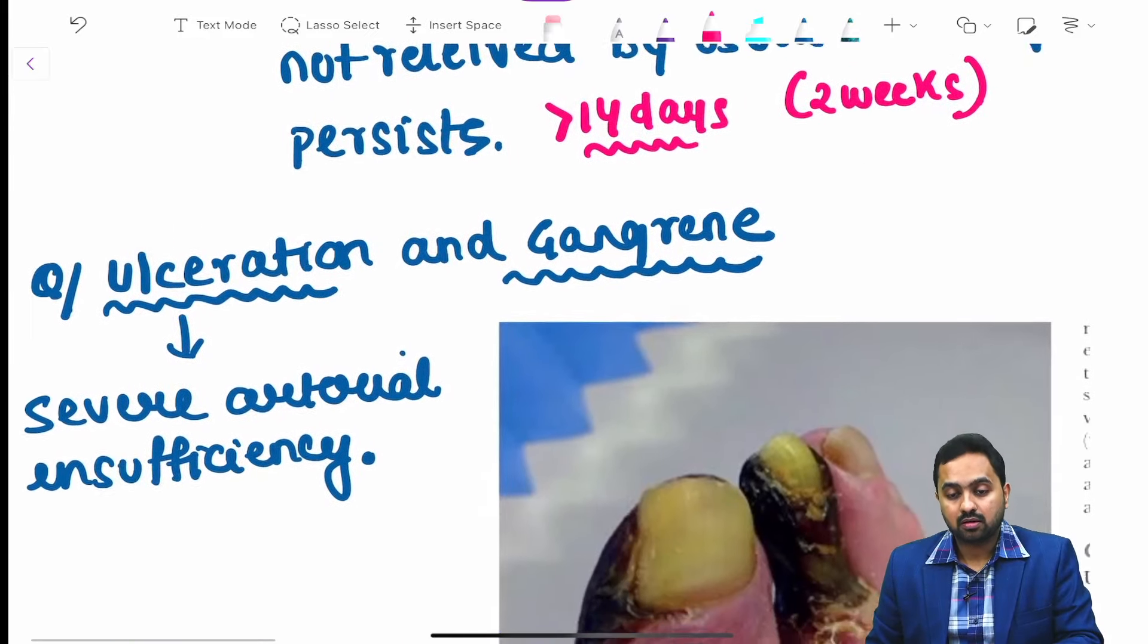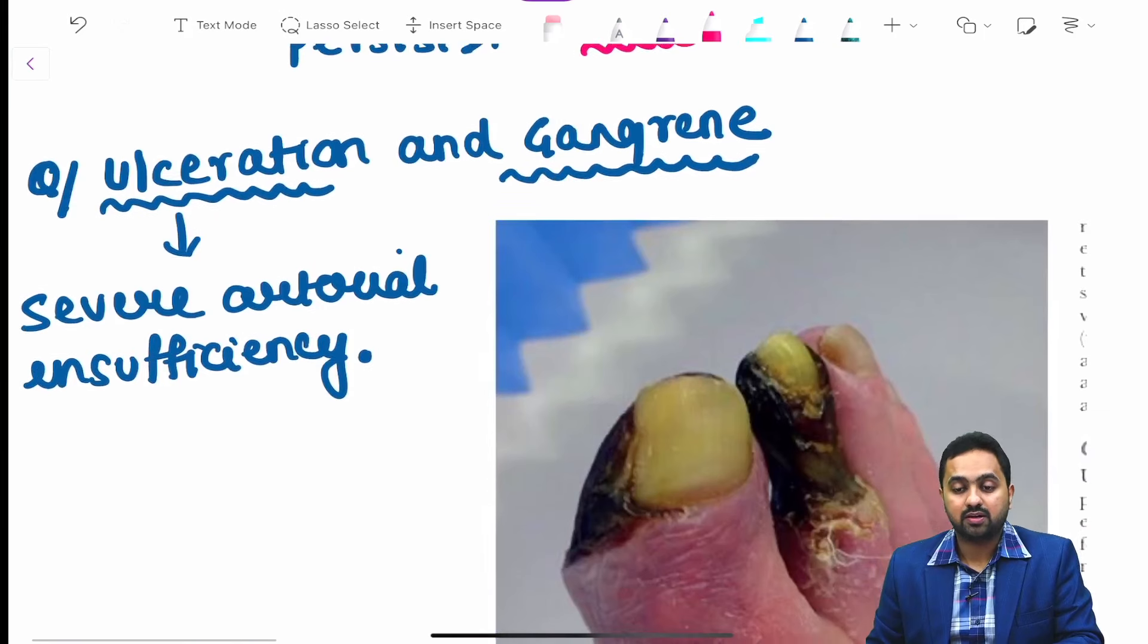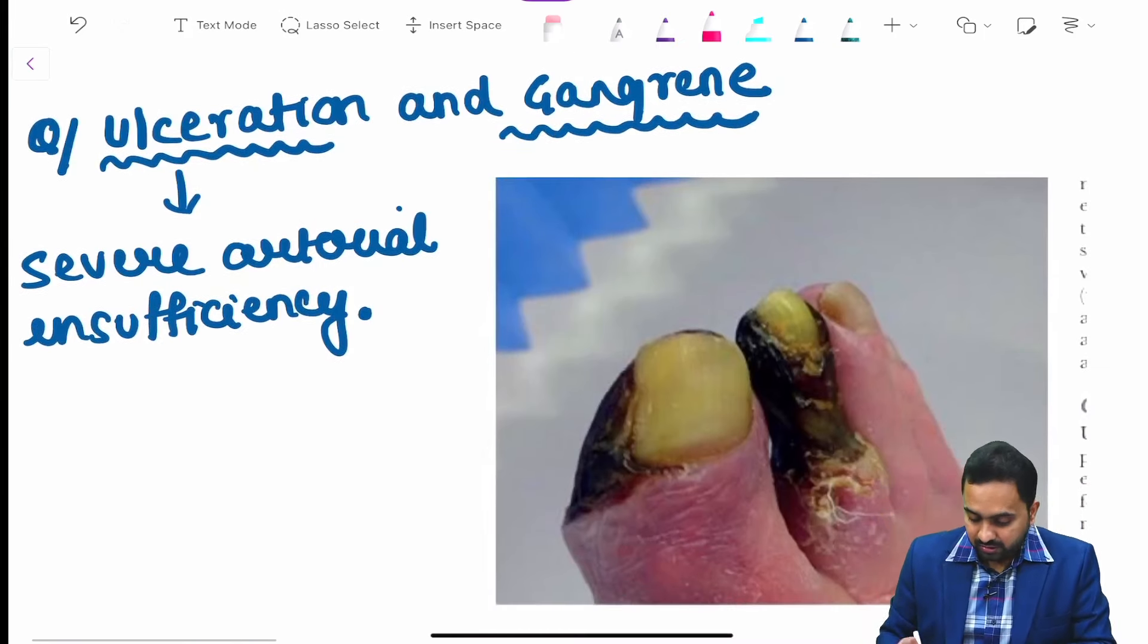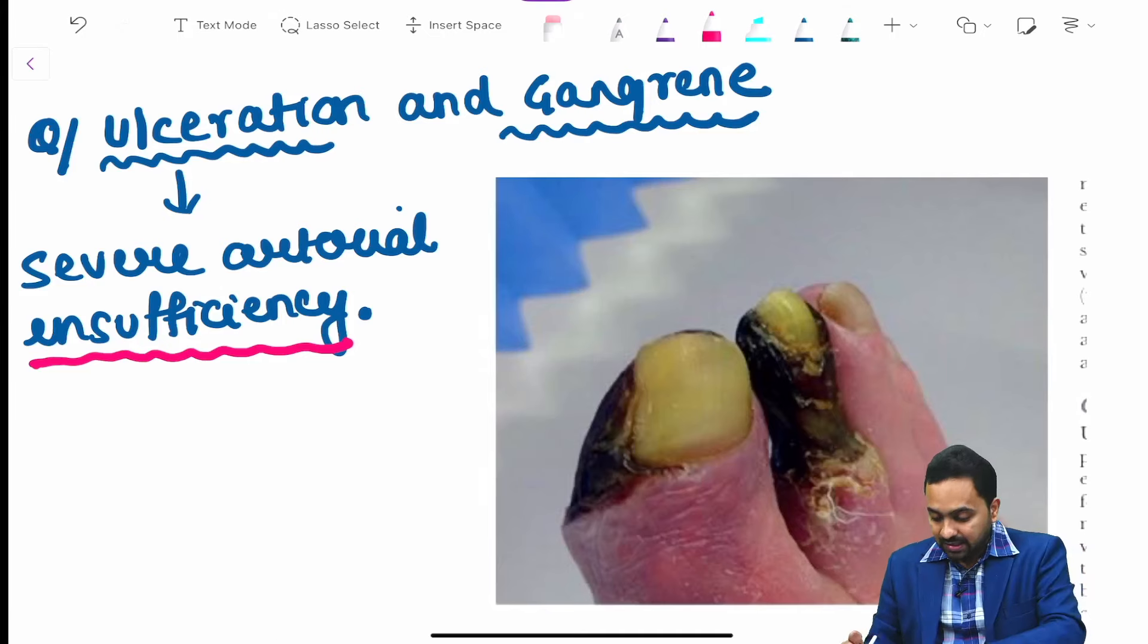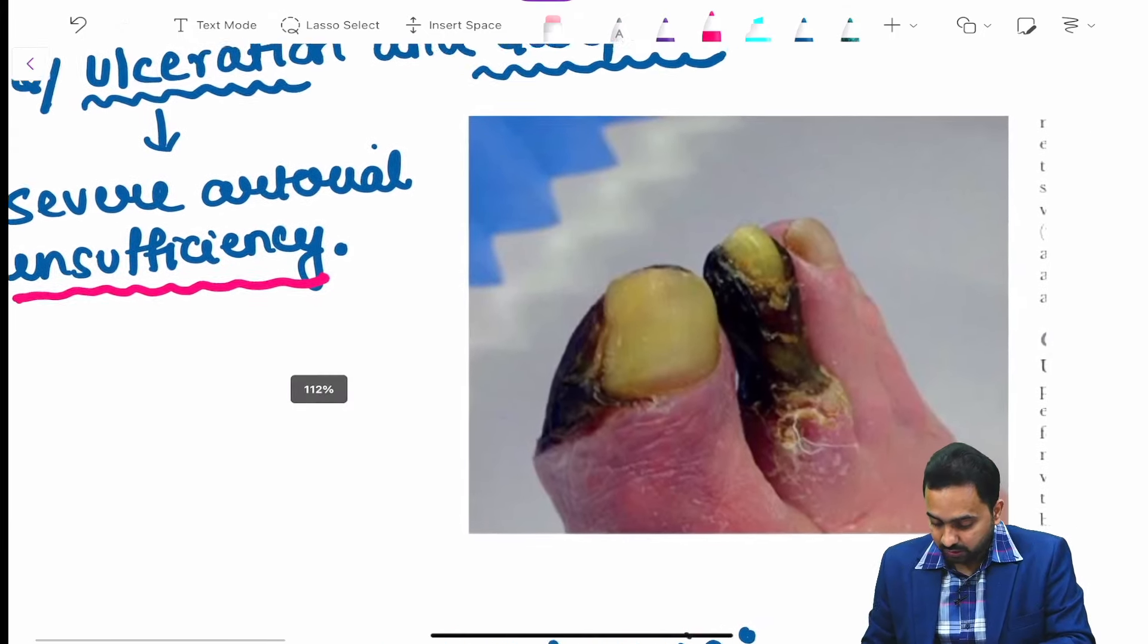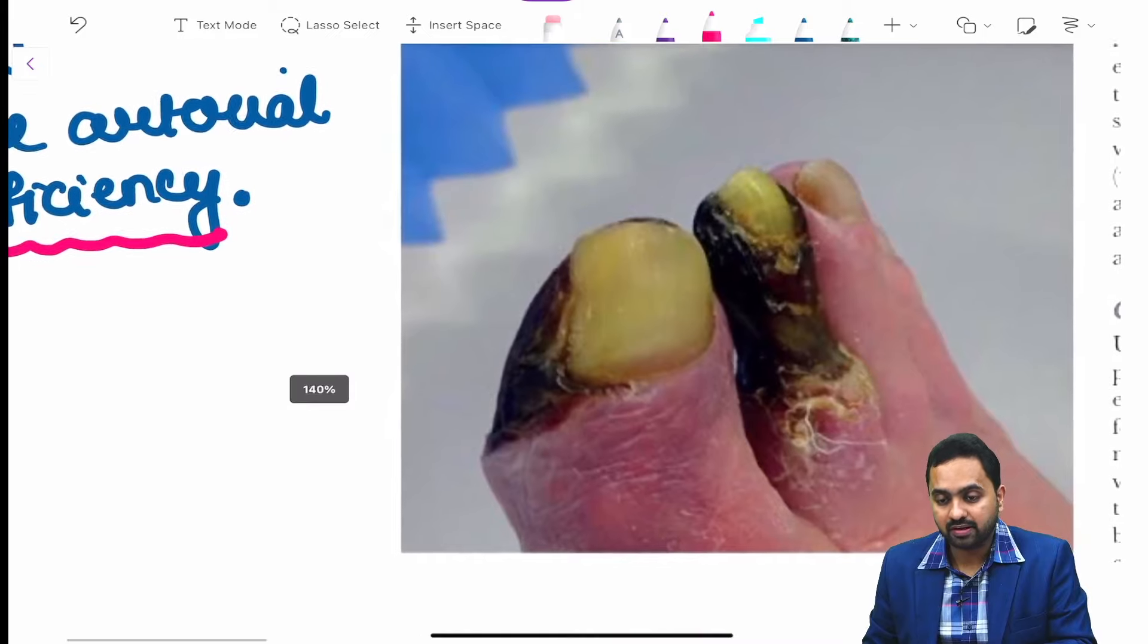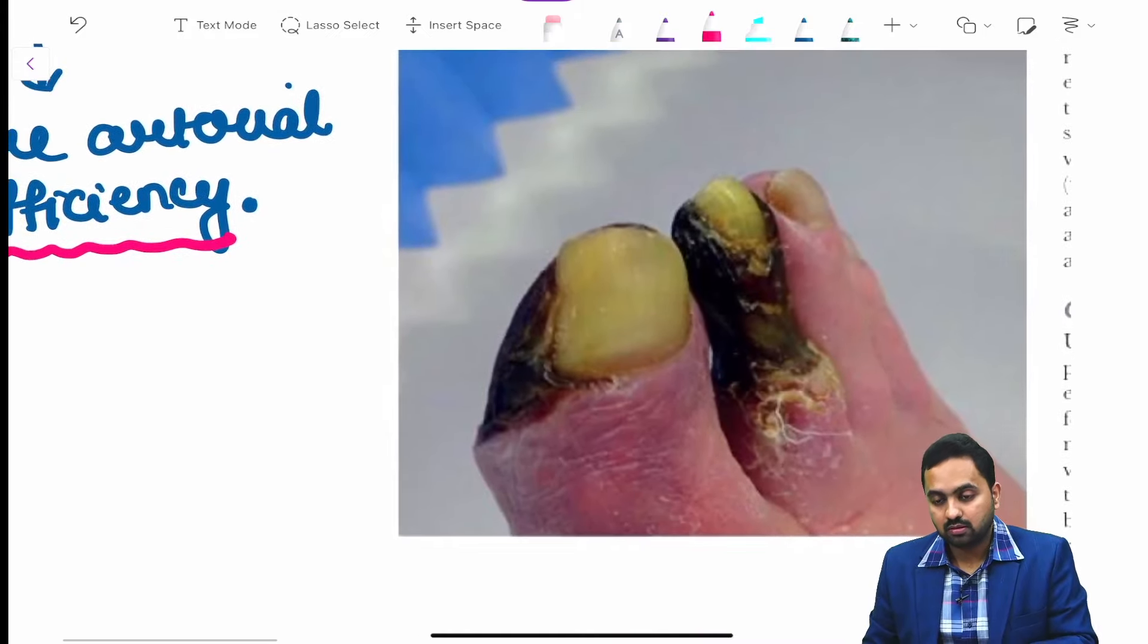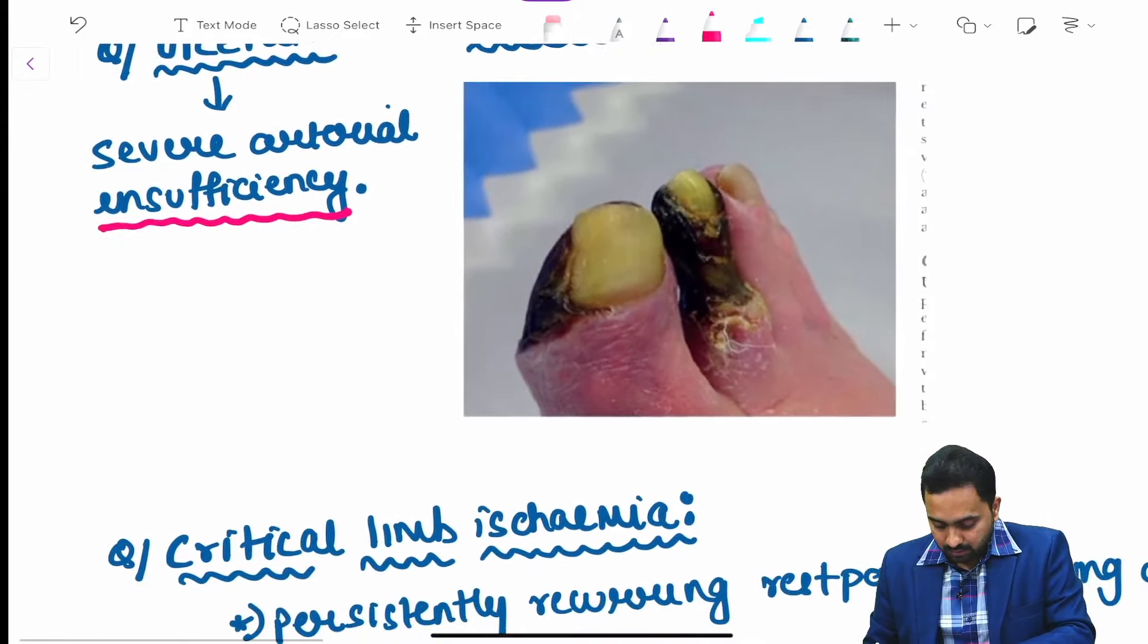Coming to ulceration and gangrene, ulceration occurs when there is severe arterial insufficiency. This image shows gangrene of the great toe.